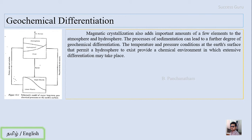By this way, the magmatic crystallization also adds important amounts of a few elements to the atmosphere and hydrosphere. The process of sedimentation can lead to a further degree of geochemical differentiation. When weathering is taking place, the mineral will be dissolved or removed according to its strength. Quartz which is more stable will stay as sediment and the elements which are readily soluble will be removed from the rock. By this way, sedimentation can lead to a further degree of geochemical differentiation.